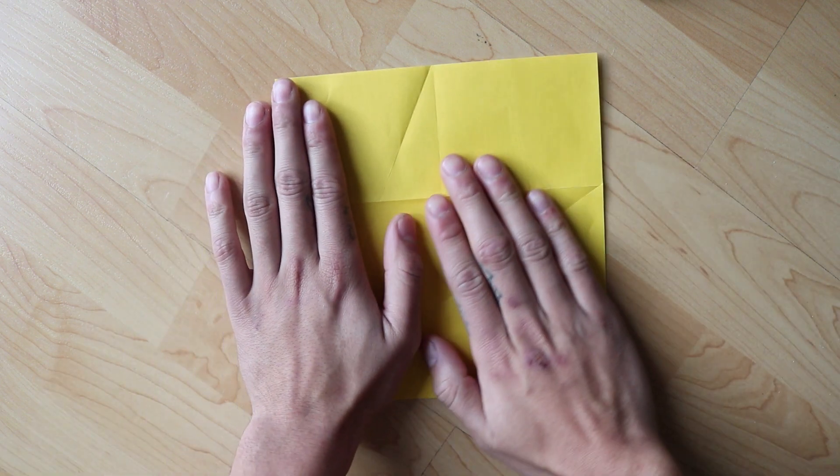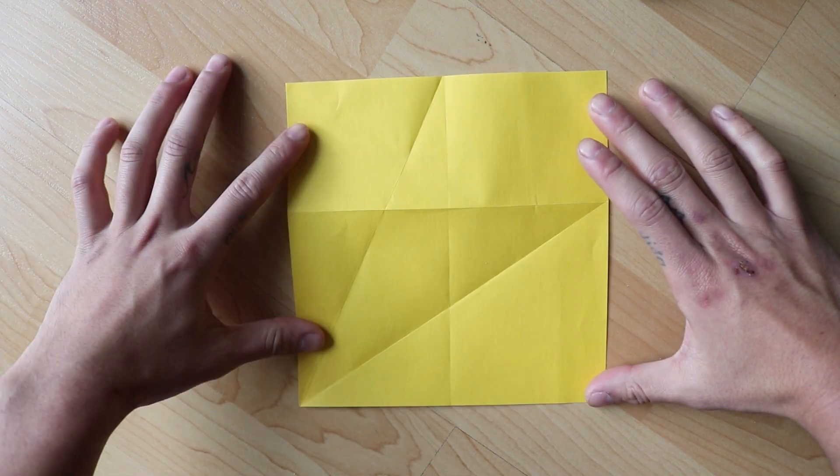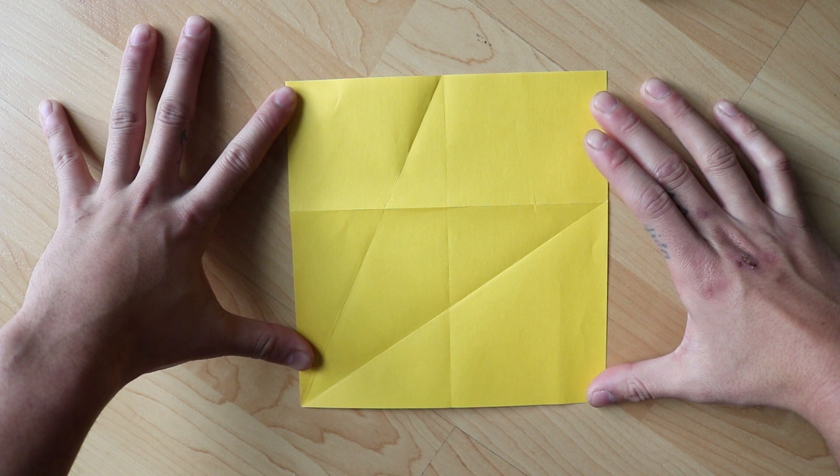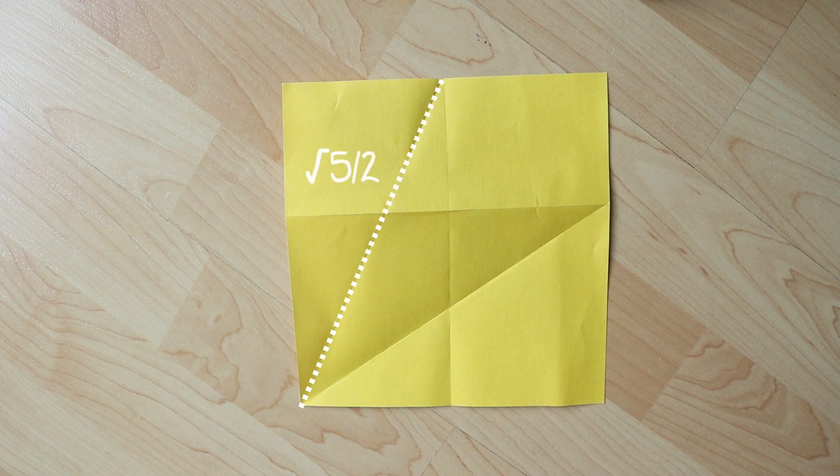Returning to our rectangle, let's use the angle bisector theorem to show that this rectangle is golden. We'll start by assigning the square sides unit length. After our first two folds, we have a diagonal of length root 5 over 2. Here's where we use the angle bisector theorem.